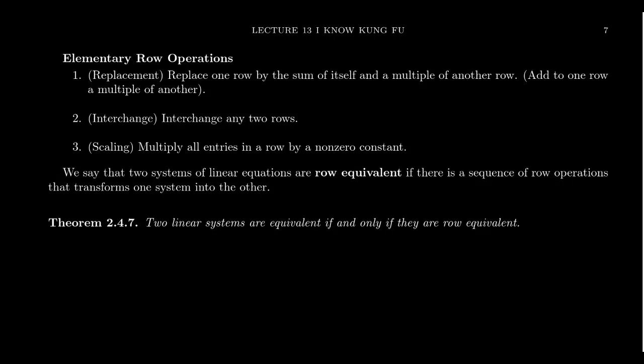In the last video, I left us with a promise: if we can row-reduce a matrix so that it becomes echelon form, or even better row-reduced echelon form, and if we can do that in such a way that it doesn't change the solution set, then that will give us a method for solving systems of linear equations. The way we can do that is to use the so-called elementary row operations.